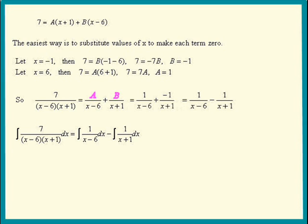The integral of 1 over x minus 6 is ln of absolute x minus 6. Then we have a minus sign. The integral of 1 over x plus 1 is ln of absolute x plus 1 plus c.